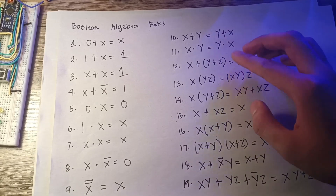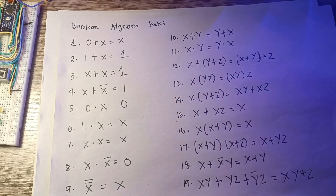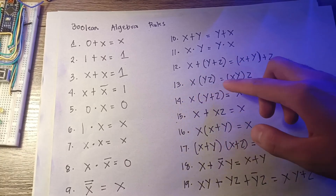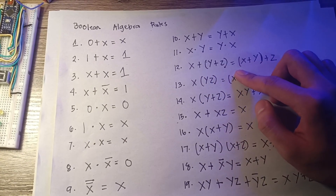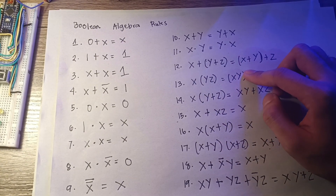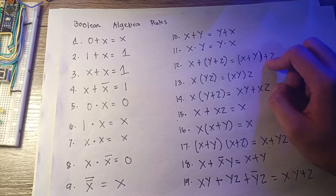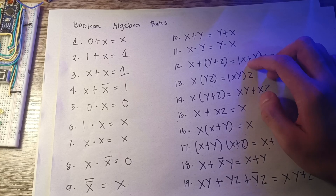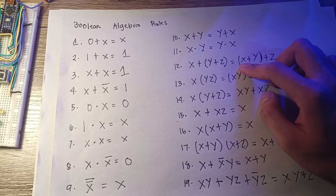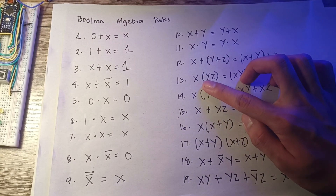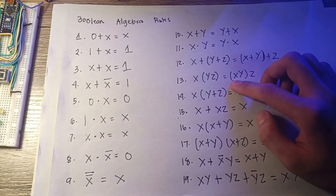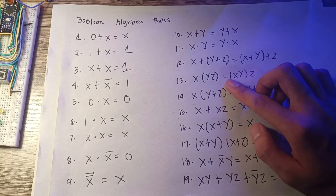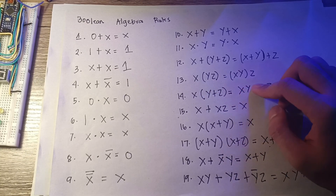Rule 12 and 13 are the associative laws. Rule 12 states that in the addition of several terms, the sum obtained by adding the first term to the second and then the third is the same as adding the second and third first and then the first. Rule 13 is the associative law of multiplication, stating that in a product with three factors, any two may be multiplied together followed by the third.